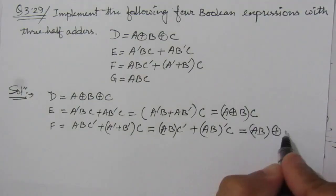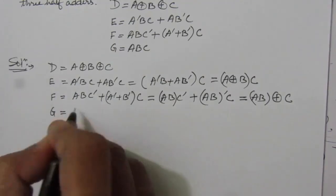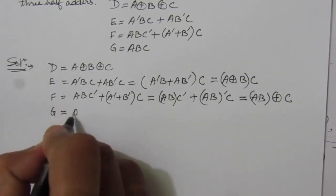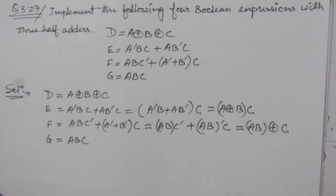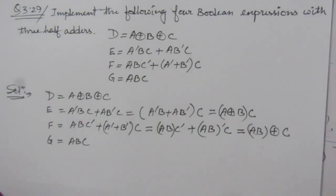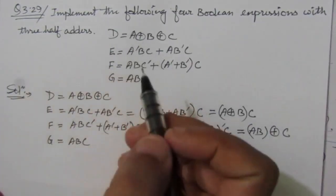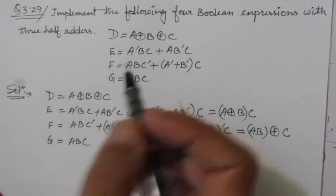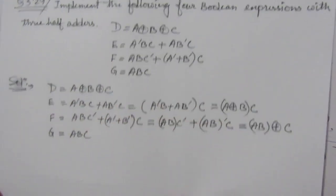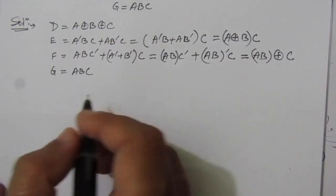The fourth expression is G = ABC. Now, in the question it is given that we have to use three half adders, so before drawing the three half adder circuit, I would like to first draw the half adder circuit.